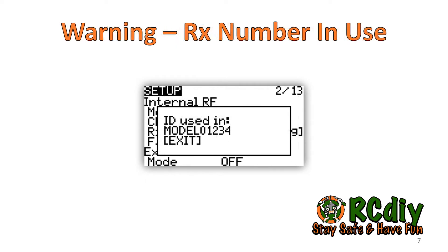On the X9D and X7S, when two or more models on the same transmitter have the same receiver number, a warning is displayed. Now the warning includes the name of the other model with the same receiver number.